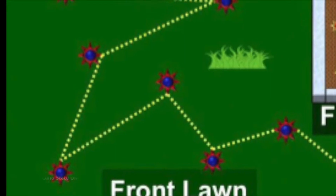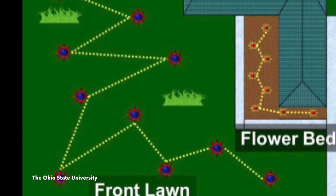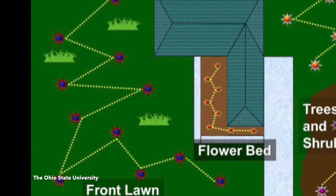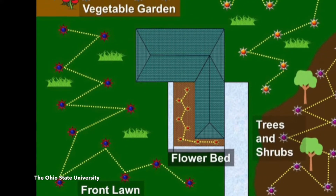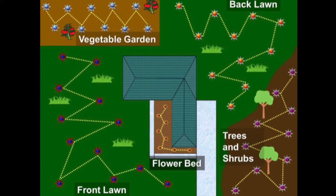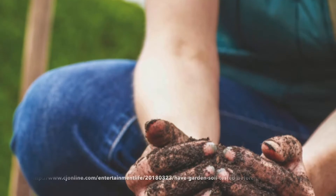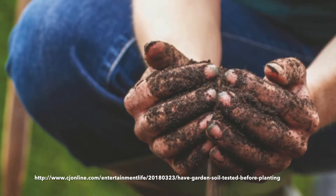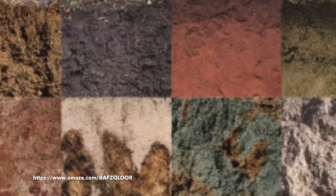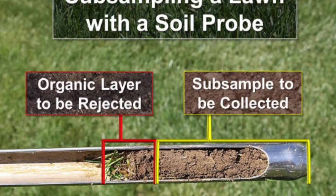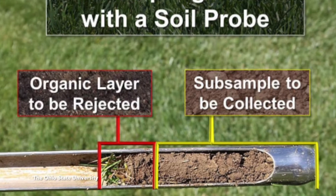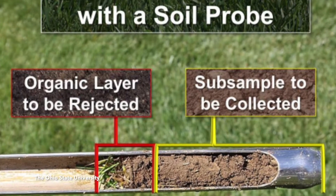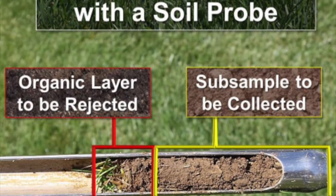Samples should be taken in a random zigzag pattern over the entire area and all samples should be taken at the same depth and volume. Additional soil tests should be performed in areas that receive different soil fertility programs, soil color variation, and different plant species. Do not include the organic matter on the top of the soil because the organic matter can alter the soil test results.